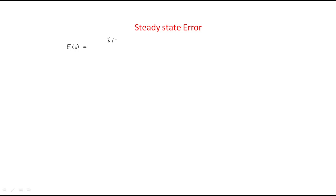We will continue the topic of steady-state error. In the last class we discussed steady-state error. The formula is: E(s) = R(s) / (1 + G(s)) in the s-domain. The steady-state error value is the limit as s tends to 0 of s·E(s). These are the formulas we will use.